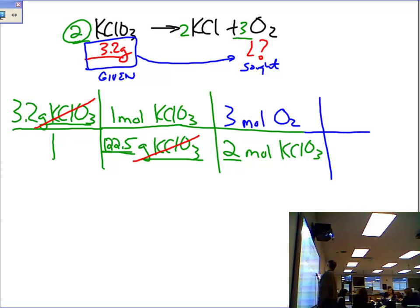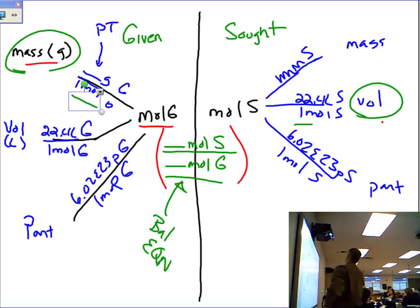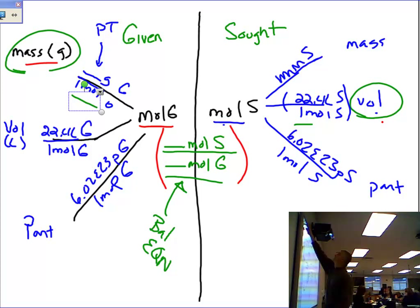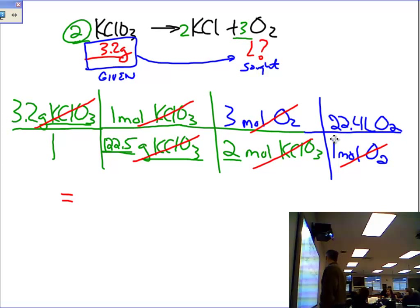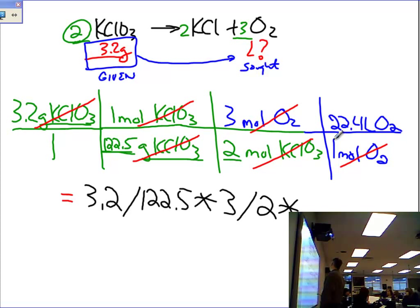And then the last step, what's the last step here? The last step is we now have, we've gotten to here. We need to go from here to the volume. So I'm going to use the 22.4 number, right? So one mole of O2 is 22.4 liters of O2. Now, if we go back, what can I cancel? Moles of KClO3 cancels. And now moles of O2 cancel. I then take my calculator. Now, what can I put in my calculator? 3.2 divided by 122.5 times 3 divided by 2 times 22.4. And that will give you your answer, and the answer will be in units of liters of O2.